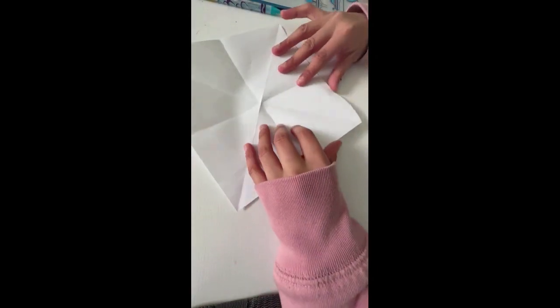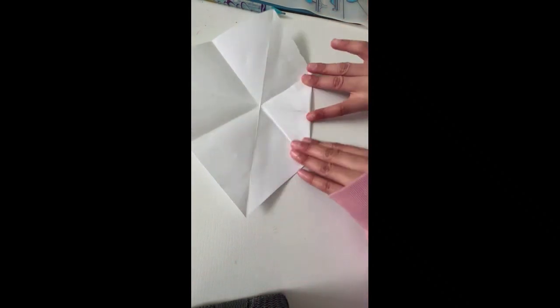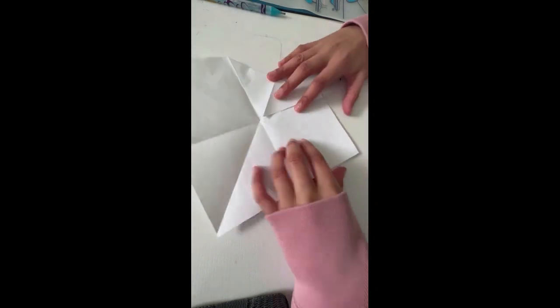So what we're gonna do is this is kind of like a rhombus shape. We're gonna fold it in half, just that little bit like that. Then we're gonna do the same with the rest.